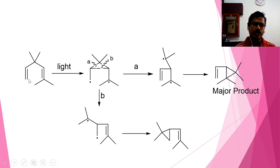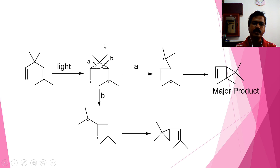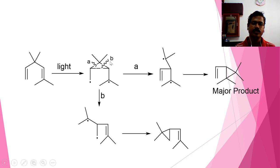this double bond as well as this double bond undergo homolysis. A bond would be formed between these two carbon atoms, and a radical is formed. Now, this diradical intermediate can react in two ways. The bond between this carbon and this carbon can cleave, which is represented as A, and the bond between this carbon and this carbon can cleave, which is represented as B.